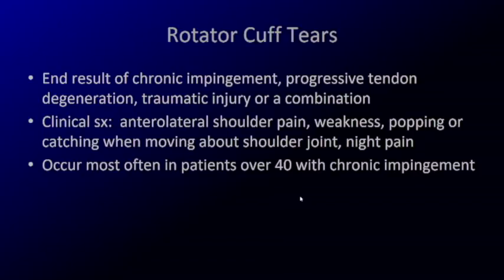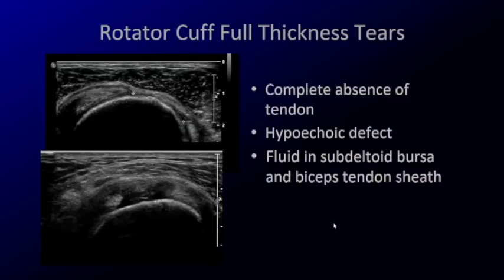Moving on to rotator cuff tears: with chronic impingement and tendinosis, you can get more and more degeneration that can progress to tears. Sometimes a tear can also be due to a traumatic injury, or both — a traumatic injury in someone who already has degeneration. Patients may present with clicking, and this most commonly occurs in patients over 40, especially those with chronic impingement.